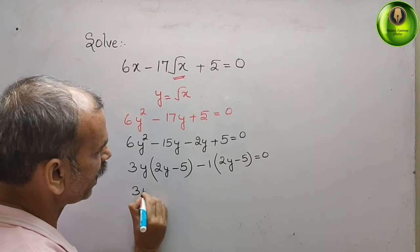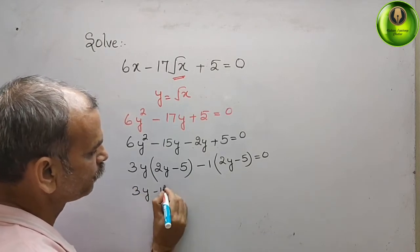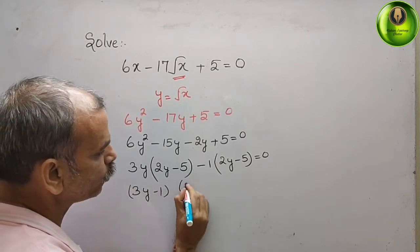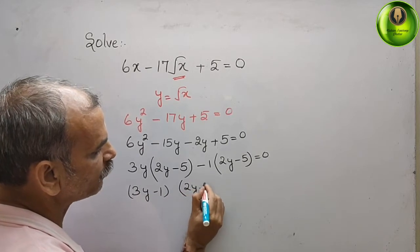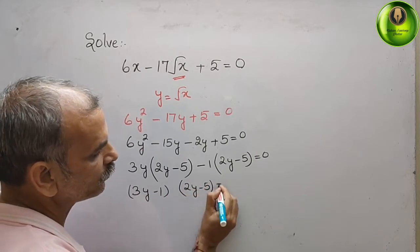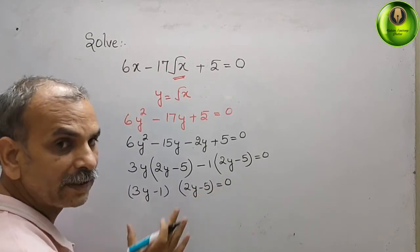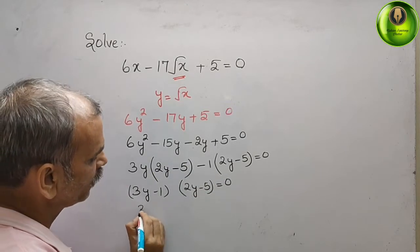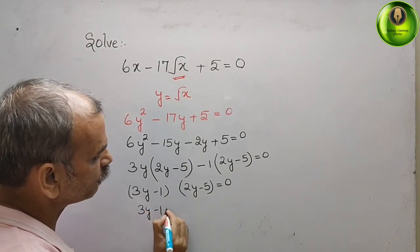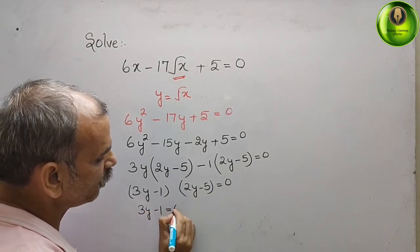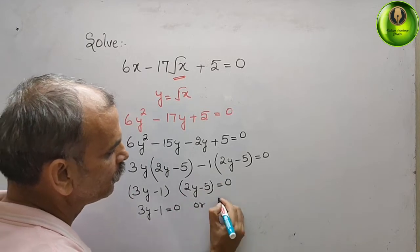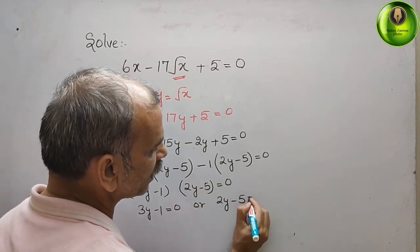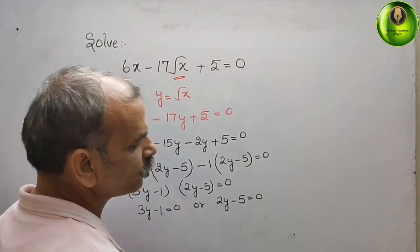The two factors are (3y minus 1) and (2y minus 5) equal to 0. That means either 3y minus 1 is equal to 0, or 2y minus 5 is equal to 0.